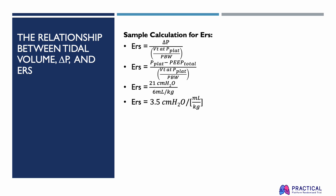The following is an example of how to calculate ERS using the measured values from the previous video. ERS equals delta P divided by the tidal volume at plateau pressure divided by the predicted body weight. When expanded, this equals plateau pressure minus total PEEP divided by tidal volume at plateau pressure divided by the predicted body weight. In this example, it equals 21 centimeters of water divided by 6 milliliters per kilogram, which gives you an ERS of 3.5 centimeters of water per milliliter per kilogram.